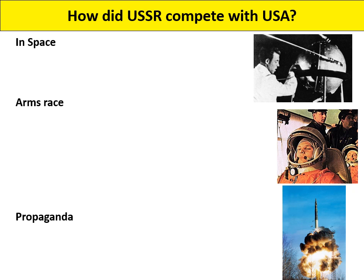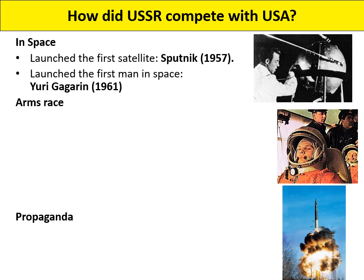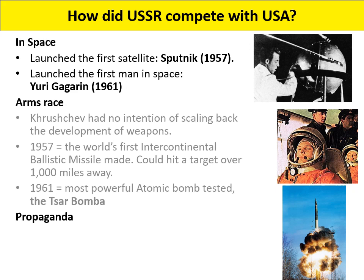Looking at how the USSR competed with the USA, there are three main ways. First, the space race. Every single person knows Neil Armstrong was the first man on the moon — an American — in 1969. However, the USSR beat the Americans in every other milestone up to that point. They were the first country to launch a satellite to orbit the world — you can see a picture of Sputnik there. They were the first to launch animals into space, such as Laika the dog, who unfortunately did not make it back. They were also the first to launch the first man in space, Yuri Gagarin, in 1961.